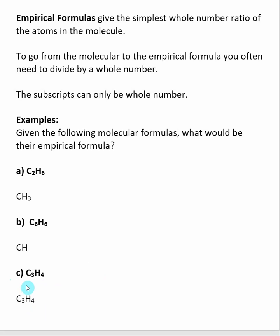So there is no simpler way that we can present the ratio of carbon to hydrogen in this molecular formula. So the ratio is 3 carbons to 4 hydrogens. We can't represent that ratio in a simpler form, so the molecular formula is the same as the empirical formula.